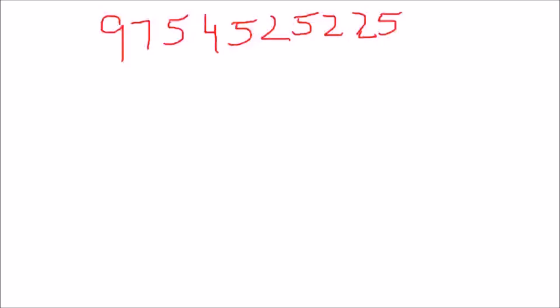Let's take another example. Suppose I have to check the number 9,754,525,225 — whether it's a perfect square or not. I go back to Rule 1: the last digit should not be 2, 3, 7, or 8. The last digit here is 5, so Rule 1 is satisfied and we move forward to Rule 2, which says to calculate the digit sum and check if it's one of 1, 4, 7, or 9.